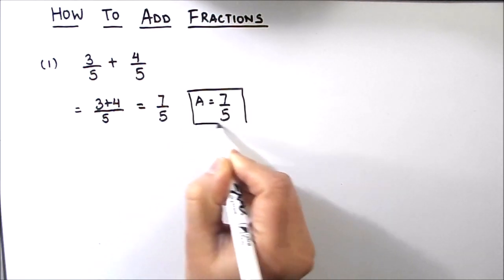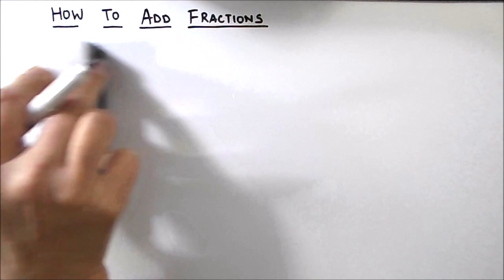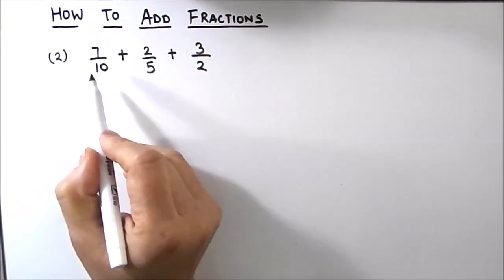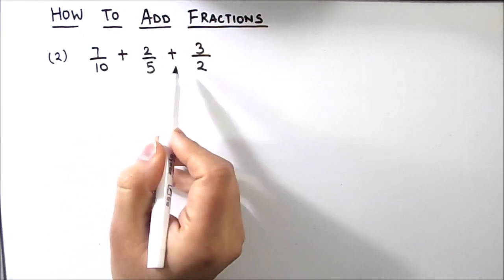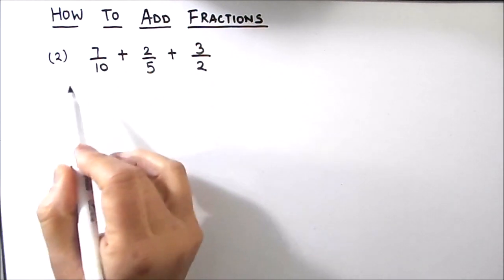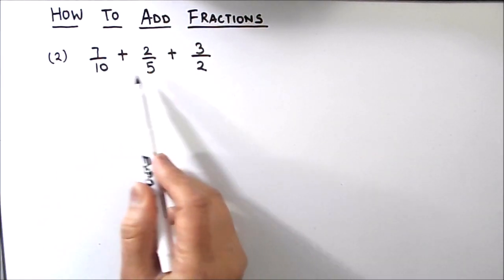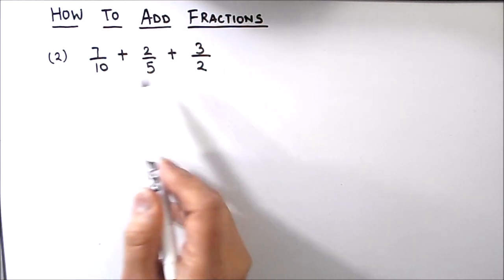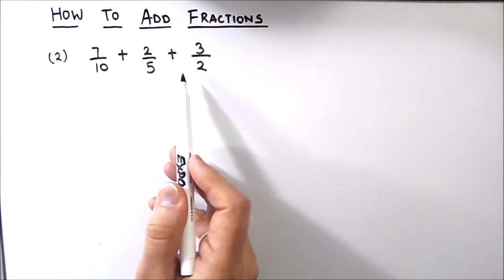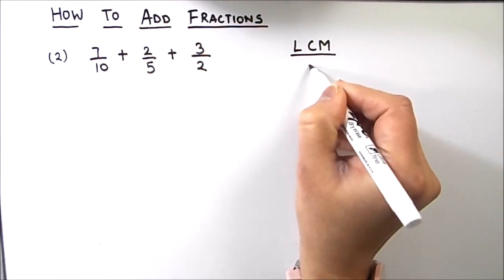This is the easiest category of fraction addition. Now let us move to our second example. Suppose we have 7 by 10 plus 2 by 5 plus 3 by 2, and we need to add these fractions. The first step in this type of fraction addition is to find the LCM of the denominators. LCM is the least common multiple.